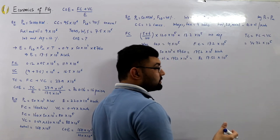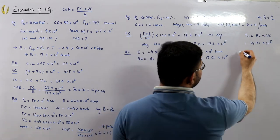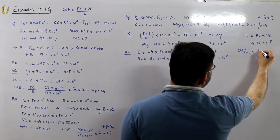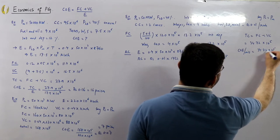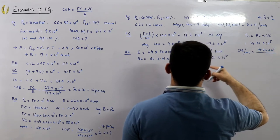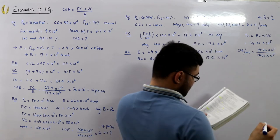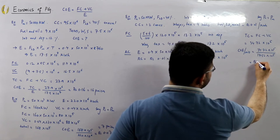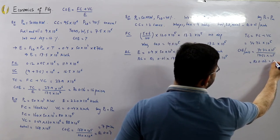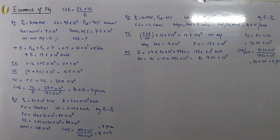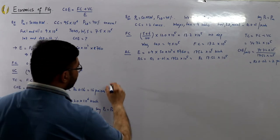Cost of electrical energy per unit = total cost ÷ energy units = 34.72 × 10⁵ ÷ 1,752 × 10⁵ = rupees 0.02, or 2 paise per unit of electrical energy produced.